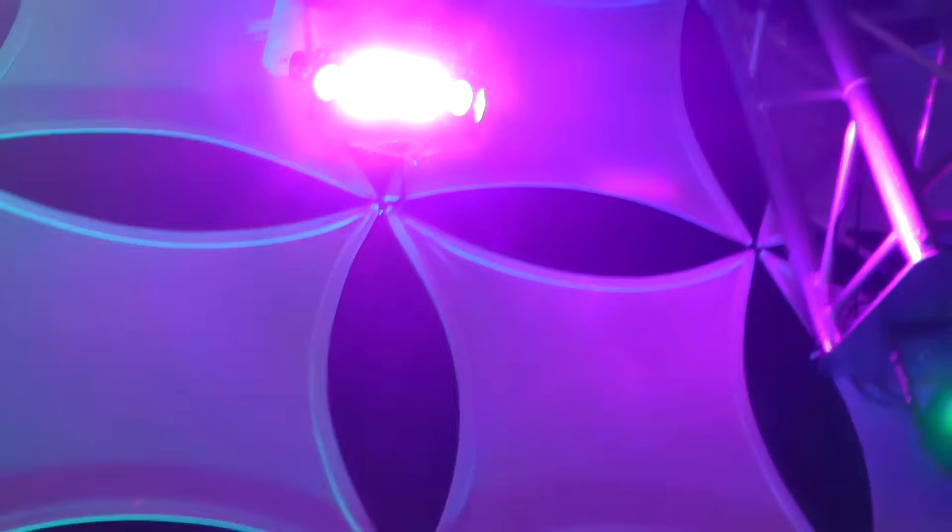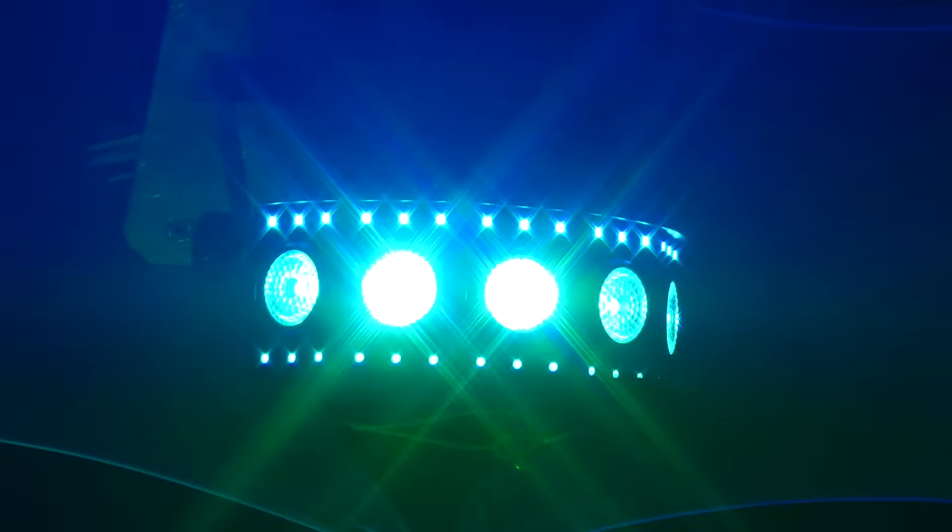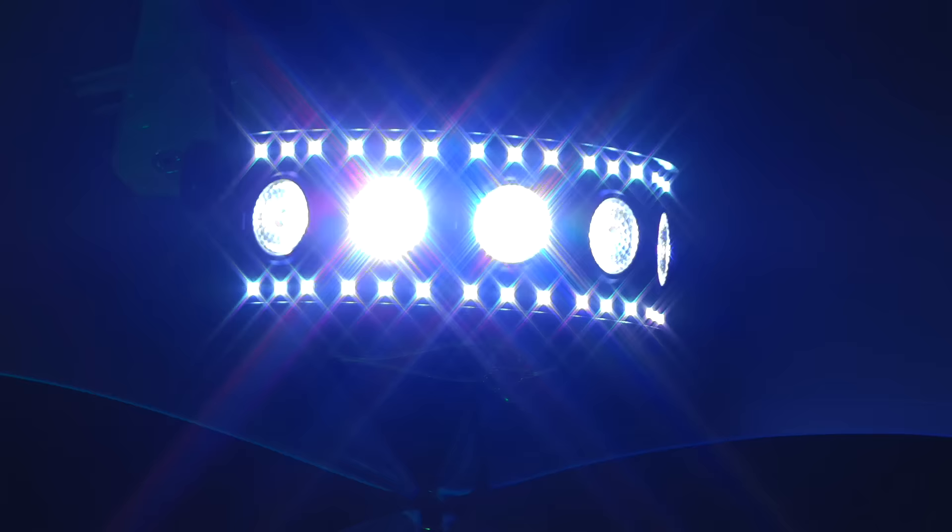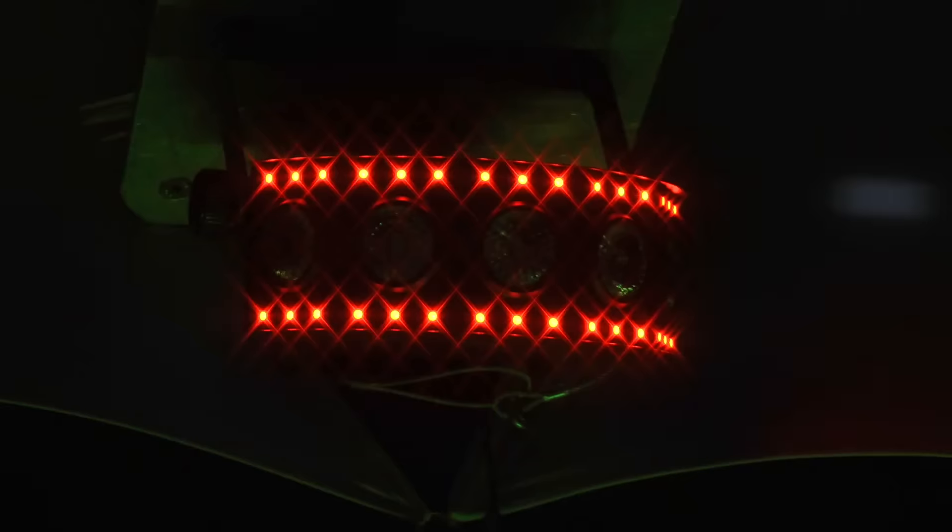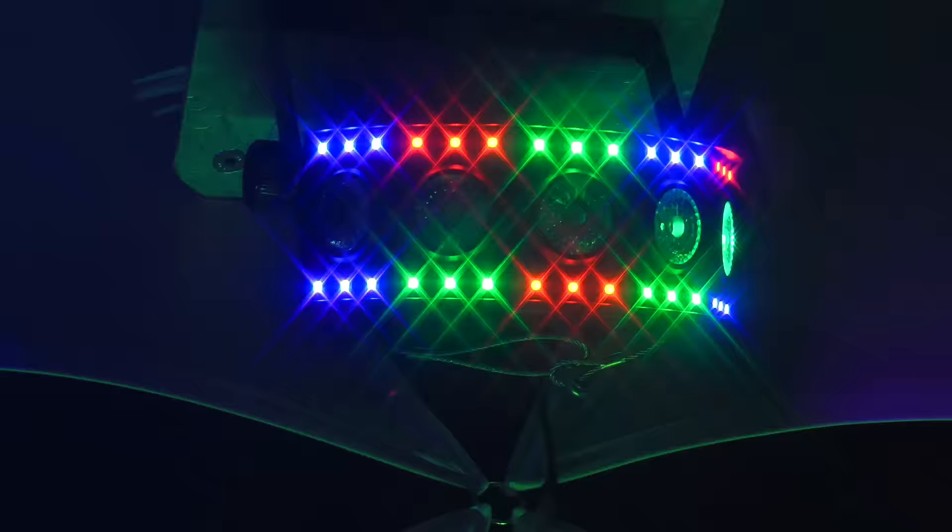We've got the FX Array Q5 here and what you have is RGB SMD LEDs on the top and bottom that chase and have zone control and then in between those two you have five quad color LEDs that are your wash lights and that's red, green, blue and UV so you can use it as a wash light or black light as well.